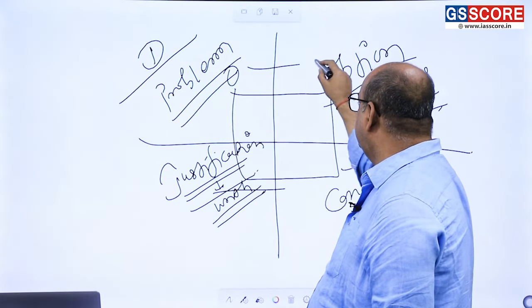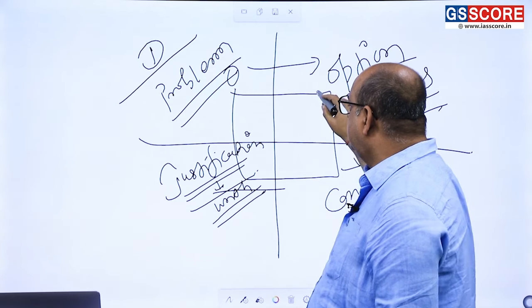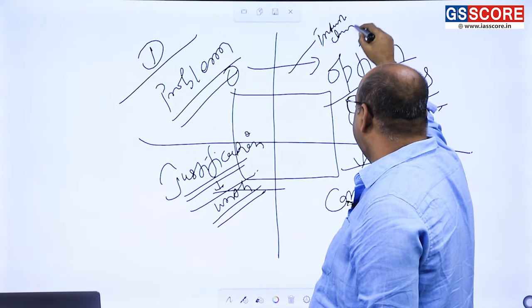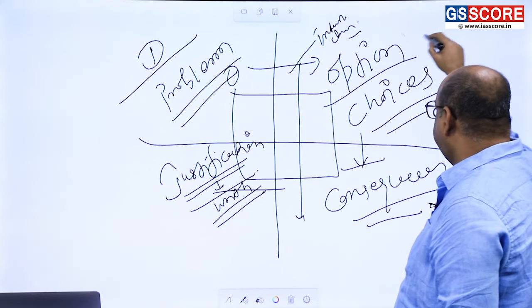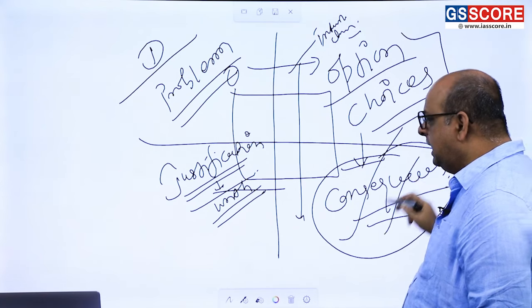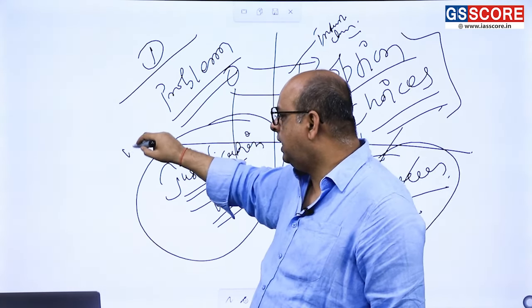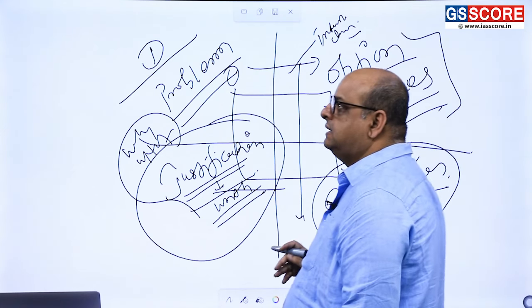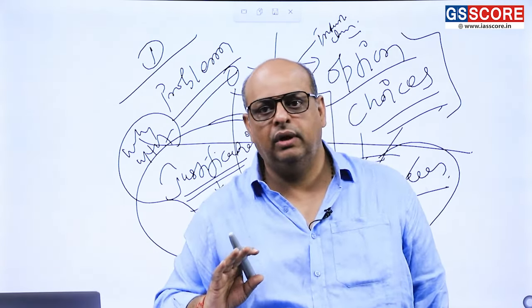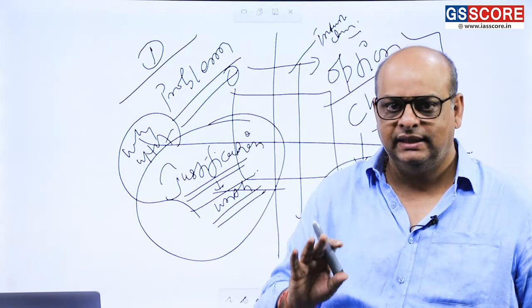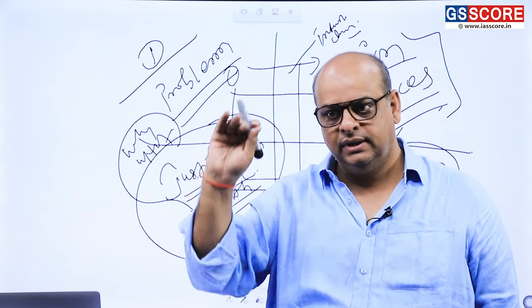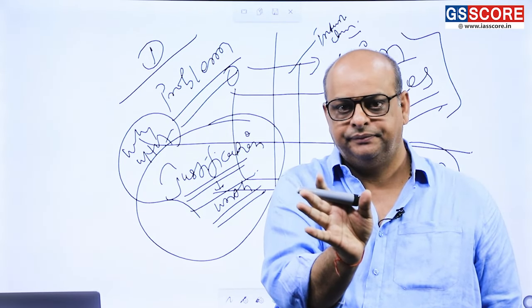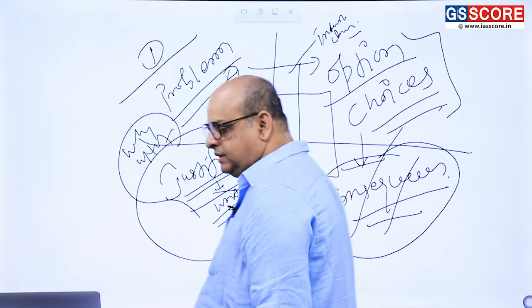Identify the problem correctly, then think for options. When thinking for options, take care of various stakeholders' interests and claims. Then, while dealing with options and choices, visualize the consequences. Then go for justification — why and why not. In any case study, bring these four elements in sync: problem, options or alternatives, possible consequences, and justification of each option.